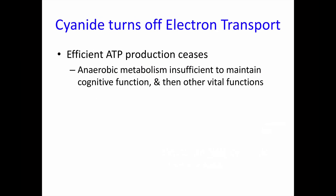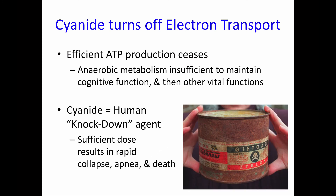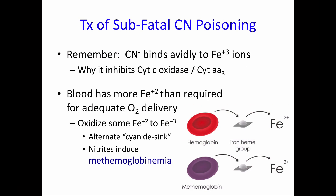When cyanide turns off electron transport, efficient ATP production in the mitochondria ceases. Anaerobic ATP production continues but can't provide enough ATP to maintain high-level cognitive functions, causing the victim to collapse and pass out. Cyanide is among a small group of poisons considered human knockdown agents because a sufficient dose results in rapid collapse, apnea, and death. One such use of cyanide was Zyklon B, used for human extermination in the Nazi death camps of World War II.